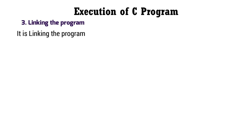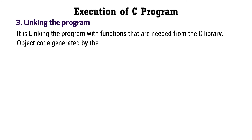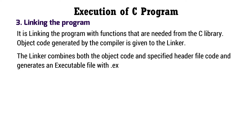Third step: linking the program. It is the process of linking the program with the functions needed from the C library. The object code generated by the compiler is given to the linker. The linker combines both the object code and the specified header file code, and generates an executable file with the .exe extension.